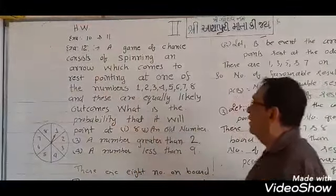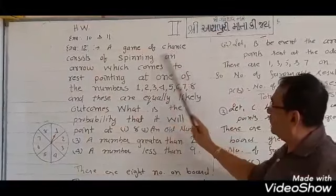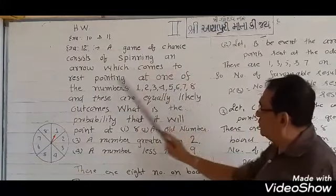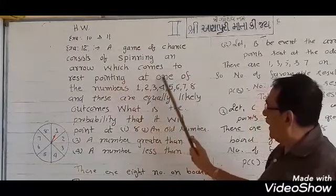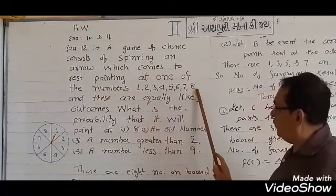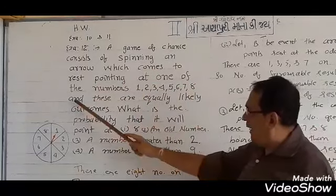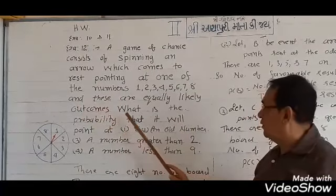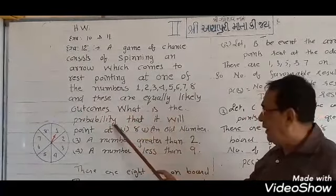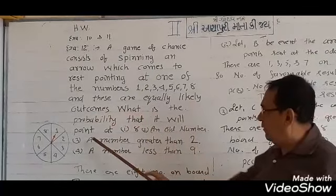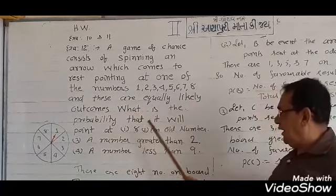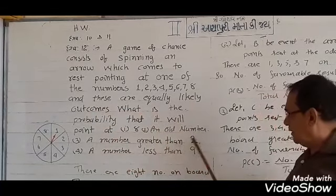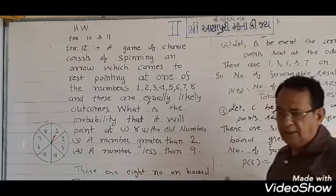Example number 12: a game of chance consists of spinning an arrow which comes to rest pointing at one of the numbers 1, 2, 3, 4, 5, 6, 7, 8, and these are equally likely outcomes. What is the probability that it will point at: (a) 8, (b) an odd number, (c) a number greater than 2, (d) a number less than 9?